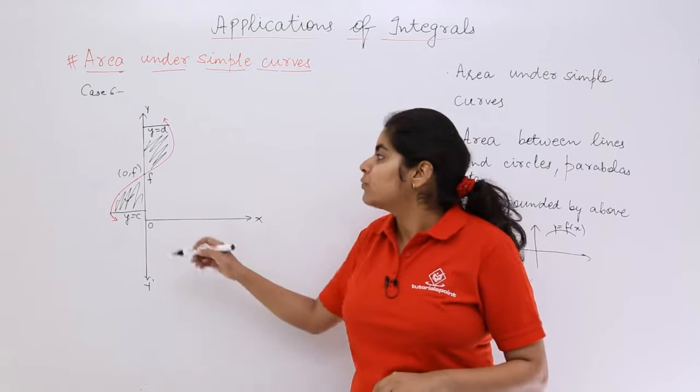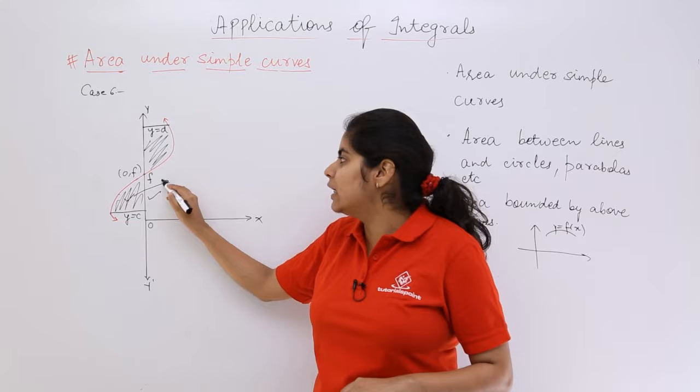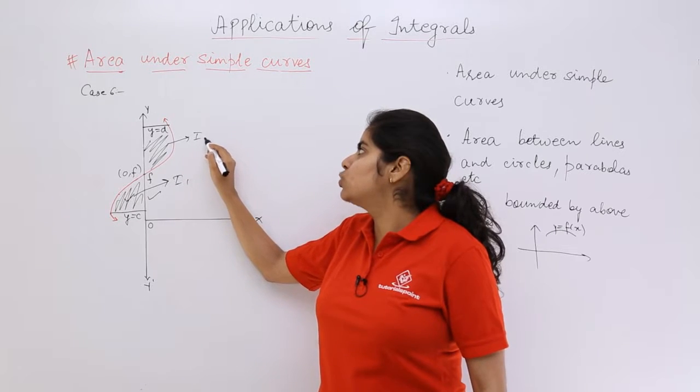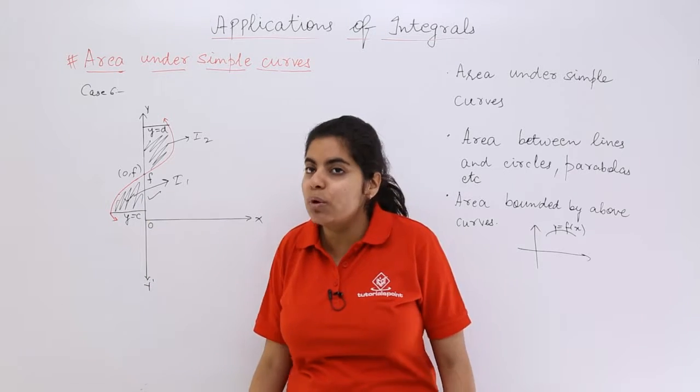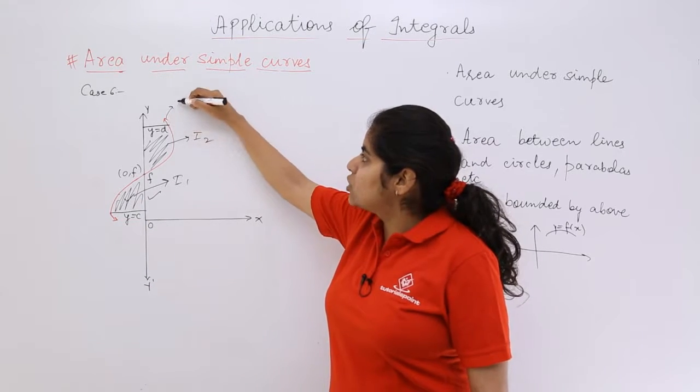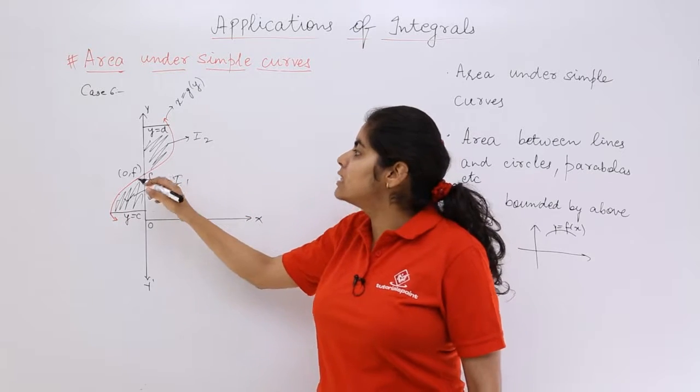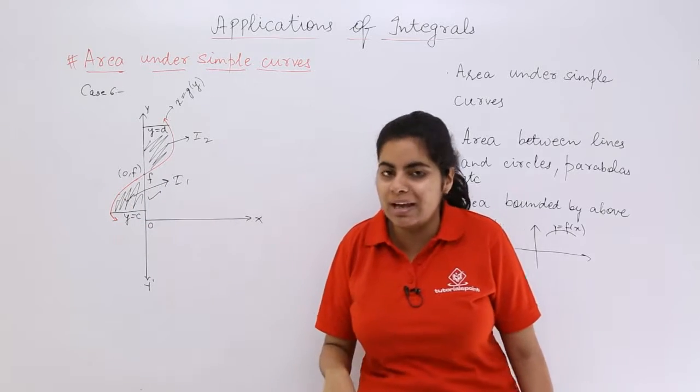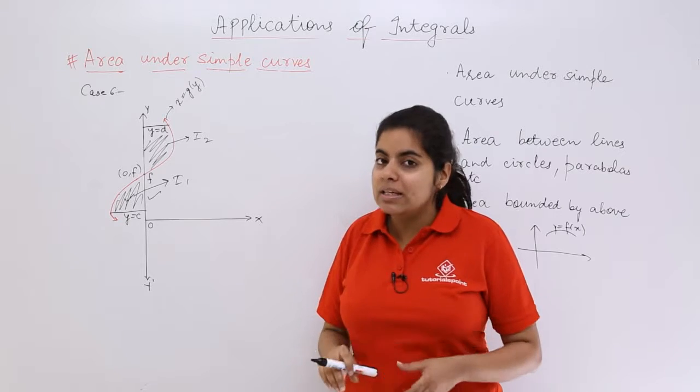So the total answer would be the answer for the area of this thing - suppose I name it as i1 - plus the answer for i2, taking the modulus. The other thing: what kind of strips are we going to take? If I take the equation of the curve as x equals g(y), because we are talking about symmetricity about the y-axis, then the answer should be integration x dy.